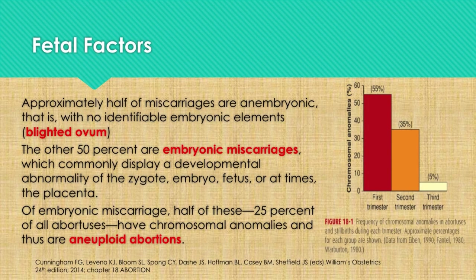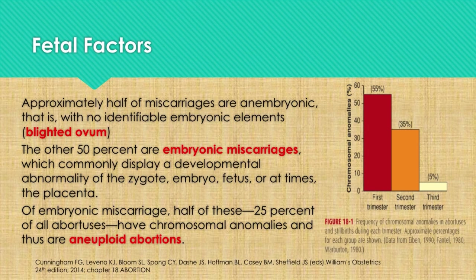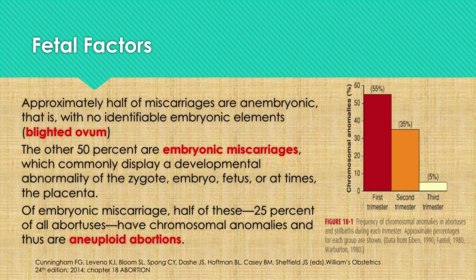Approximately half of miscarriages are anembryonic, meaning the pregnancy has no identifiable embryonic elements, or what we call blighted ovum. The other 50% are embryonic miscarriages, which commonly display a developmental abnormality of the zygote, the embryo, the fetus, or at times the placenta. Of embryonic miscarriages, half of these, or 25% of all abortuses, have chromosomal abnormalities and thus are aneuploid abortions.